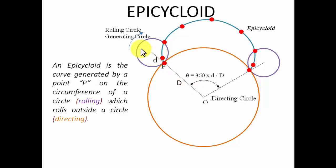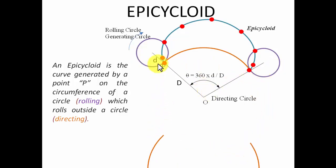This was all about epicycloid. Remember, for an epicycloid the rolling circle is rolling outside the directing circle in the clockwise direction. As far as drawing is concerned, you only need to draw this particular portion — the rest is eliminated.